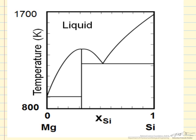What we are plotting is the temperature versus in this case the mole fraction of silicon, so a binary system, magnesium and silicon. We see a number of regions, and I want to describe what these regions correspond to.